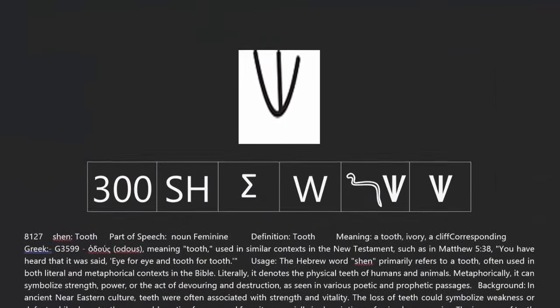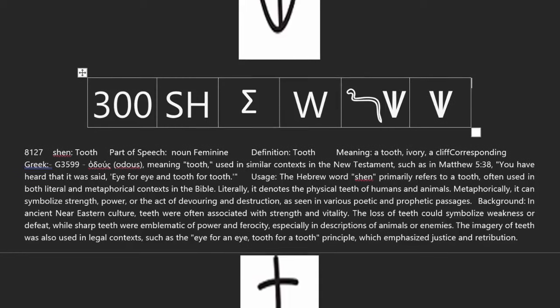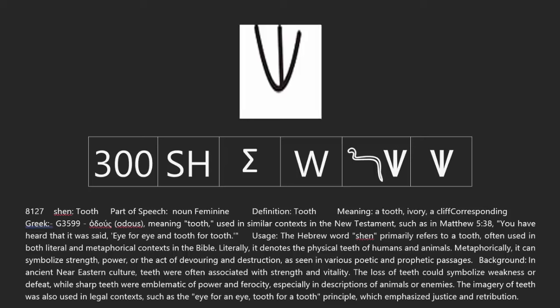There is in the Bible — Strong's number 8127 — which means tooth. If you think those are some funny-looking teeth, it's actually a side profile of the teeth. So it's a side profile — you see the teeth straight on they look like that, but turned to the side they look more like the symbol. This could represent teeth, but metaphorically it could symbolize strength, power, or the act of devouring or destruction, as seen in various poetic and prophetic passages.